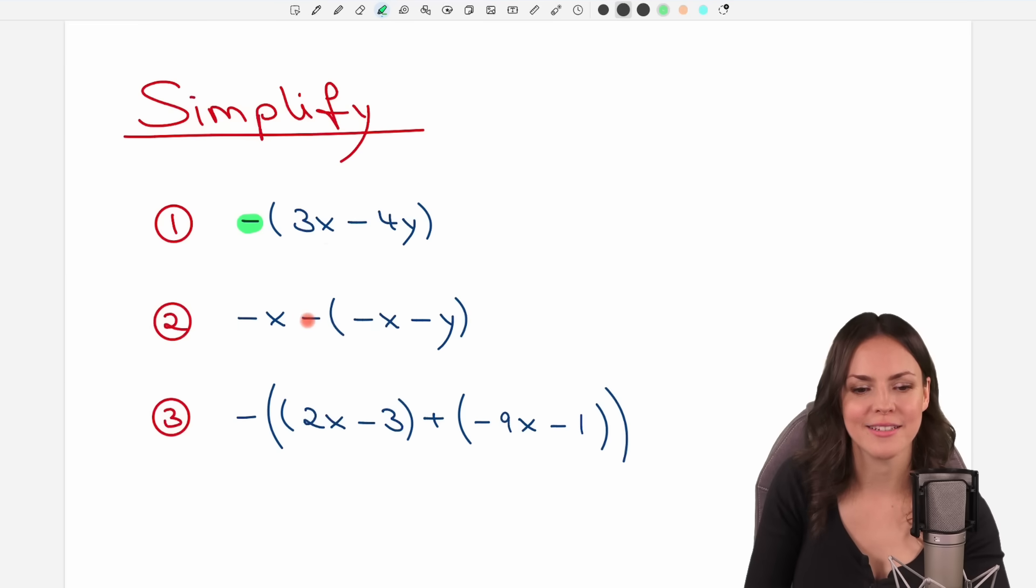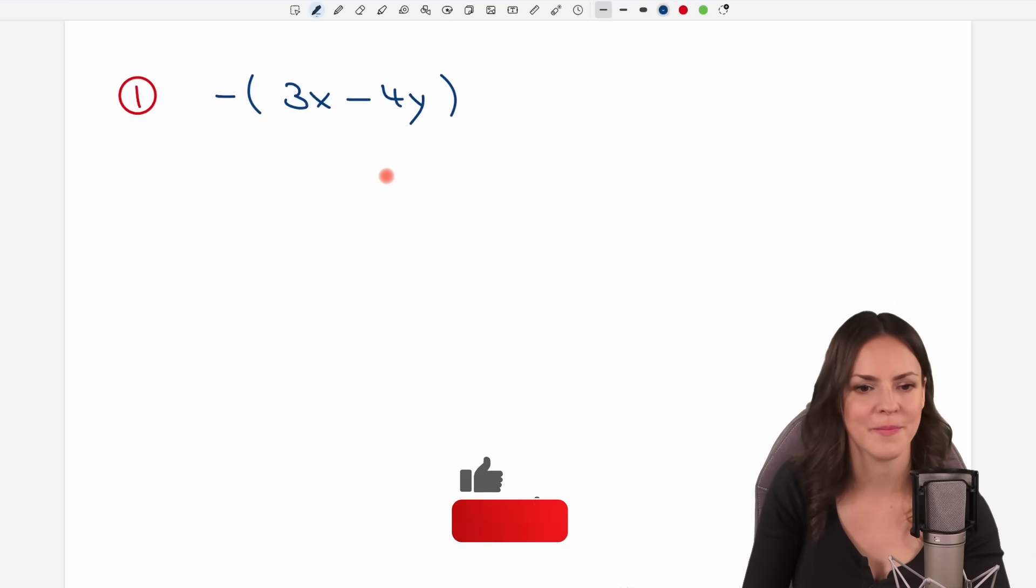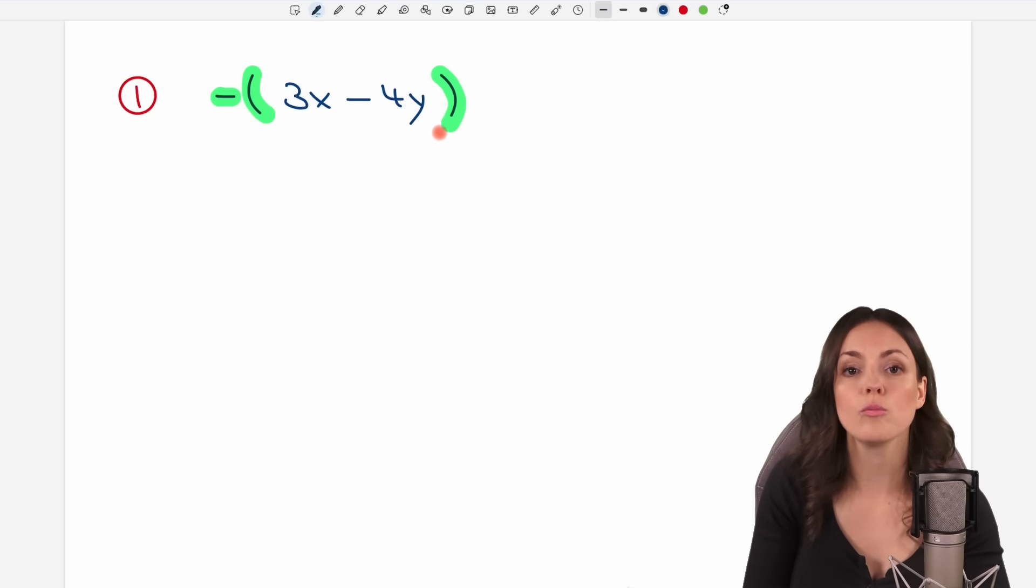We're going to take a look at these three examples together, so let's start with the first one. We have a minus right in front of our parentheses and we want to get rid of the parentheses here, so we have to apply this minus to each element inside the parentheses. I have to apply the minus to my 3x here and I have to apply the minus to my negative 4y. Let's do this.